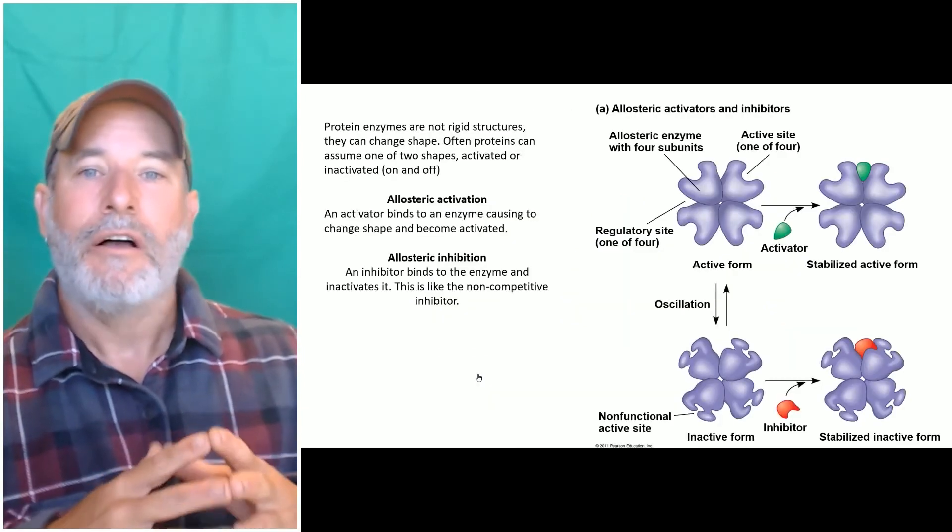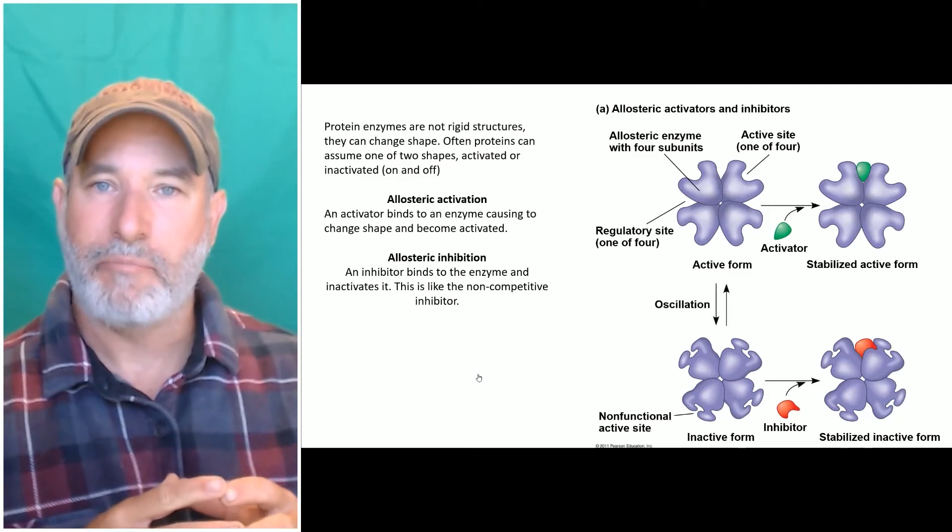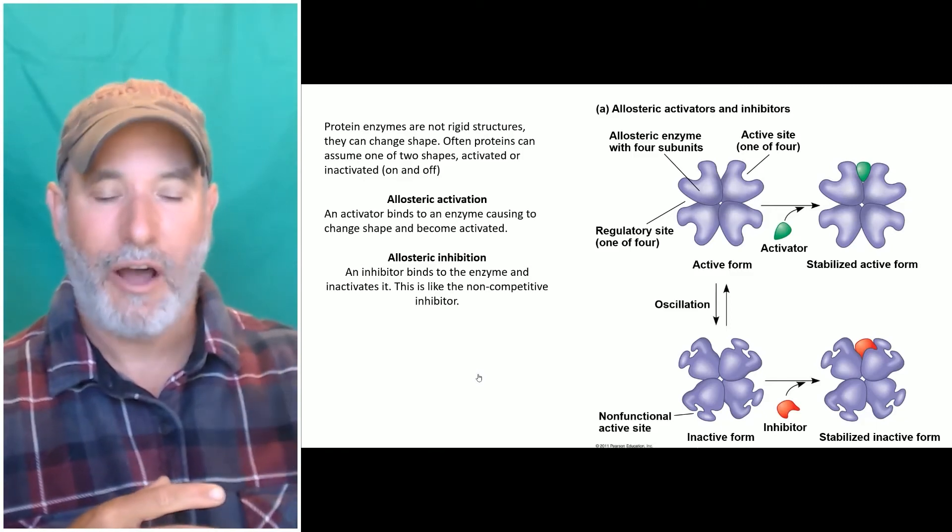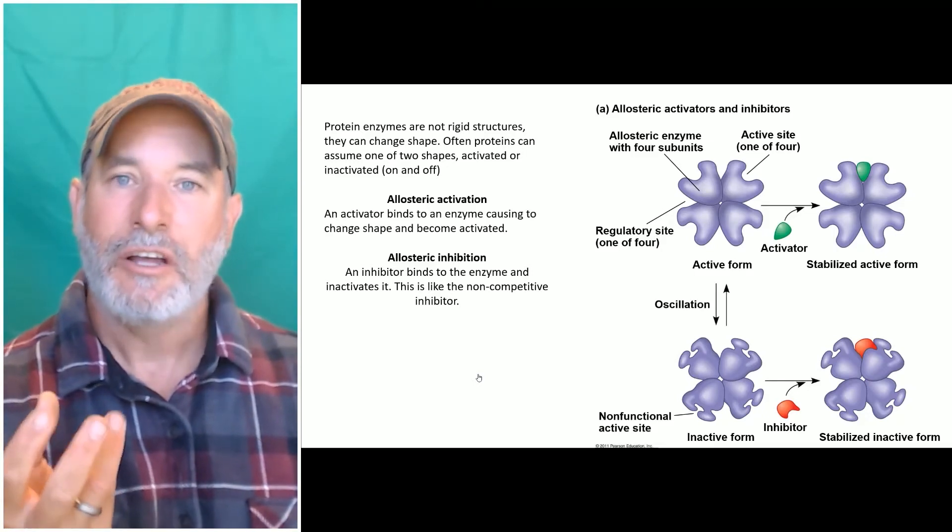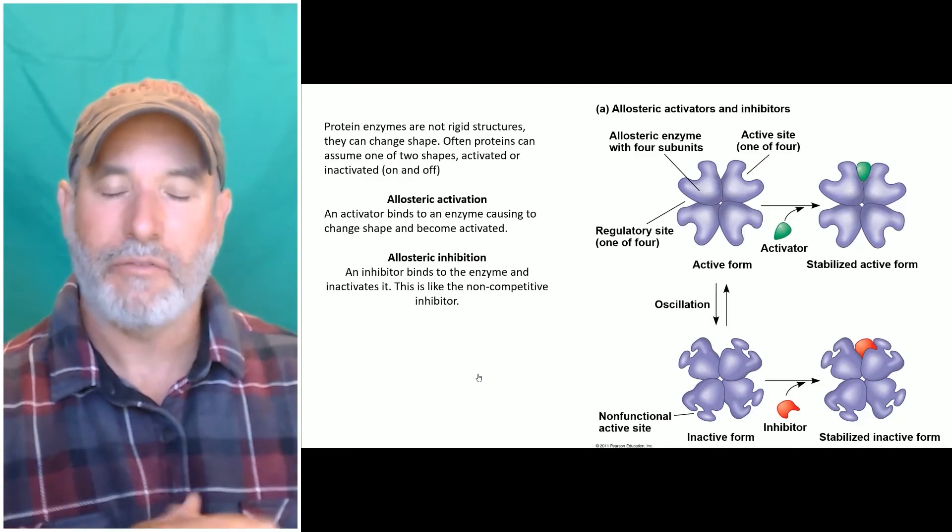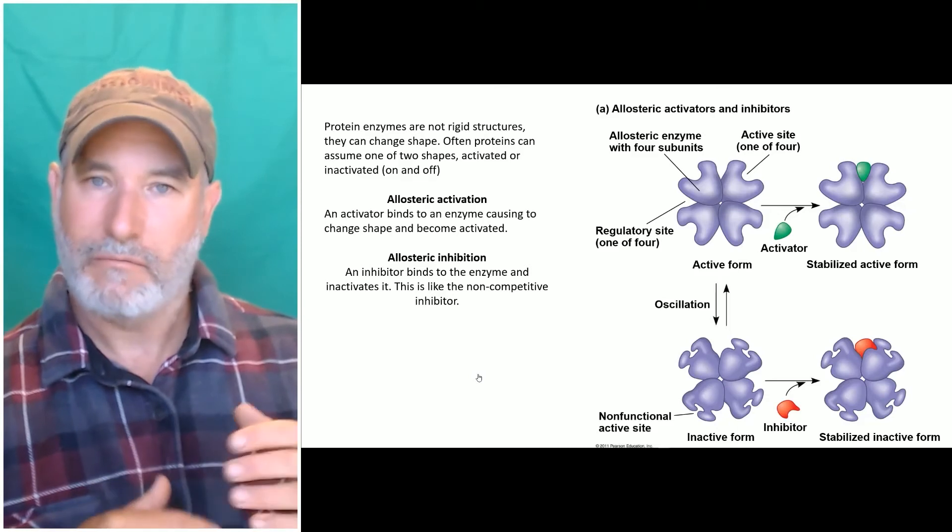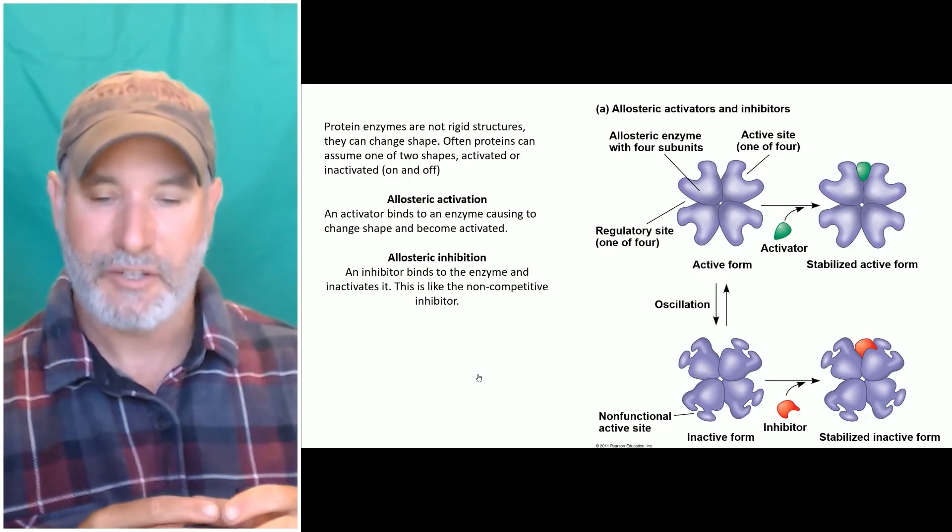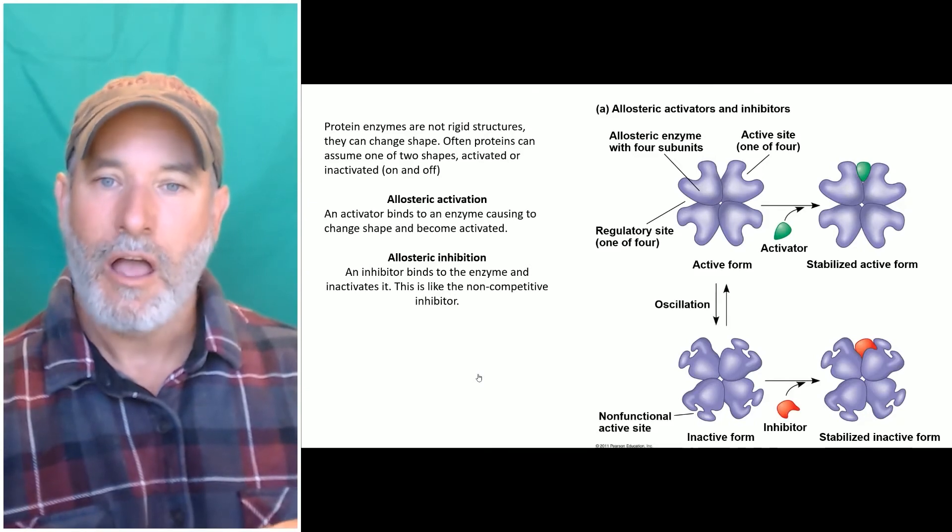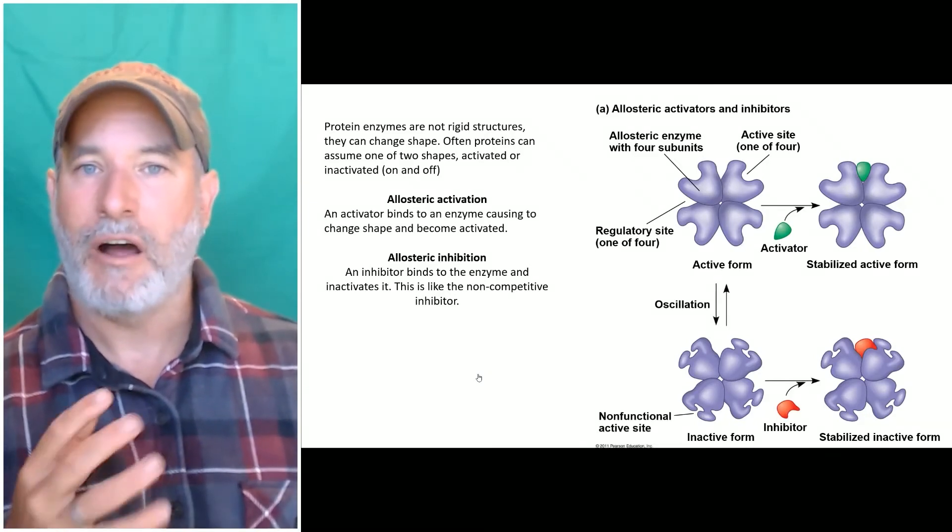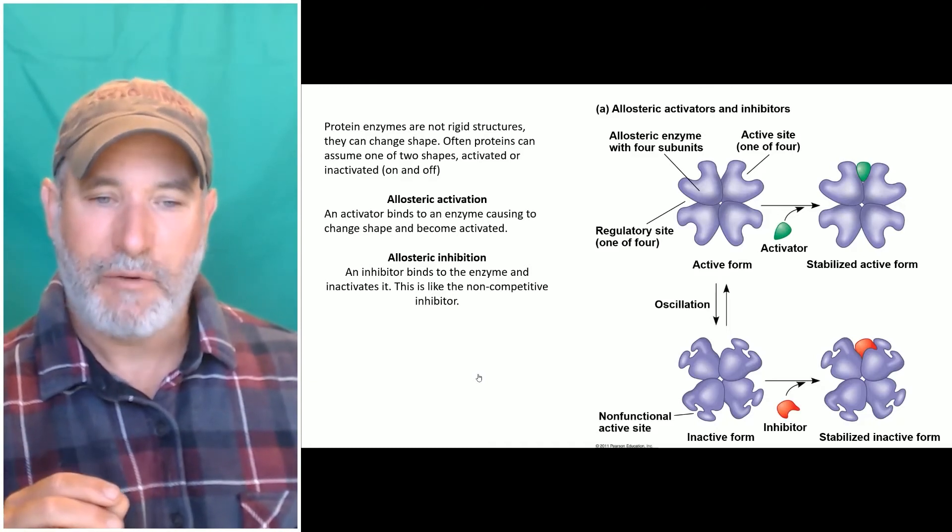I used that word allosteric, and I just used allosteric inhibition, which basically means the product binds to your enzyme at a different location, changes the active site, turns off the enzyme. There's also allosteric activation. I'm going to come back to this - I'm going to say it a couple times here: proteins are not rigid structures, they can change shape. Now this is different from denaturing. Denaturing is changing shape so that it loses biological function. But you can imagine that proteins are constantly changing shape.